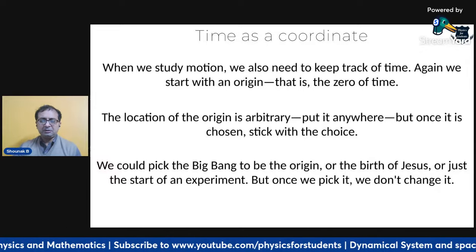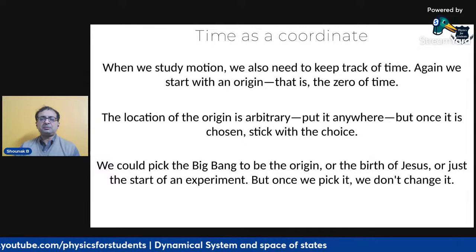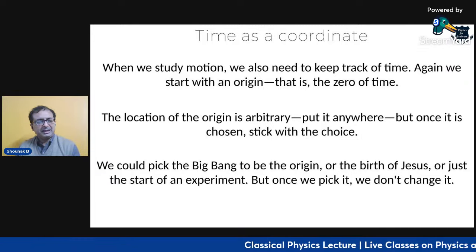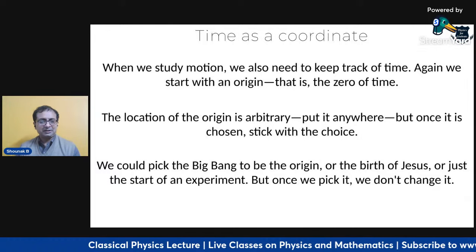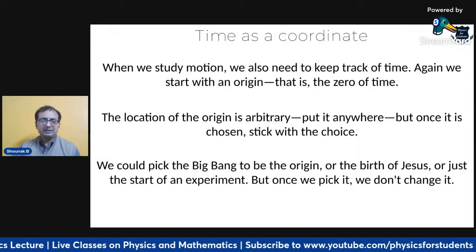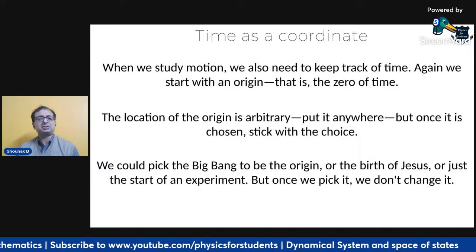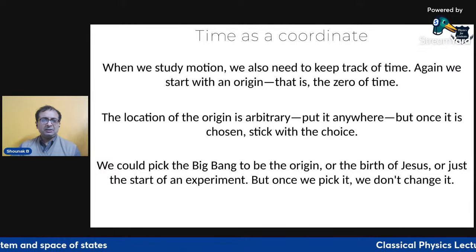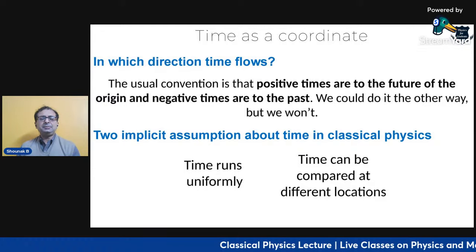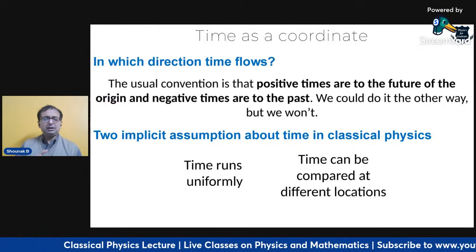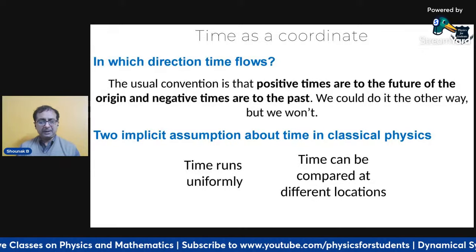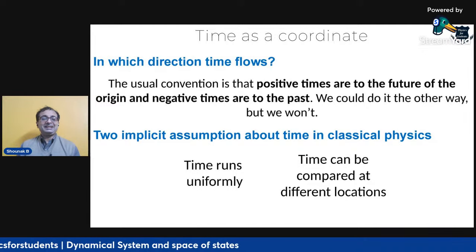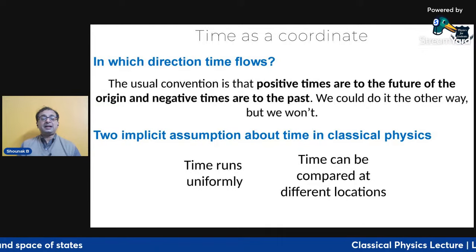When we study motion we obviously have to keep track of time. The usual convention is that positive times are to the future of the origin and negative times are to the past, but the location of the origin is again arbitrary — it could be the Big Bang, the birth of Jesus, or just the start of an experiment. We could reverse the convention, but for today's class I will take positive as future and negative as the past.